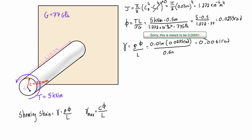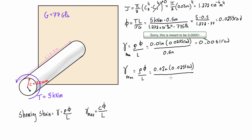That is the shearing strain at 10 millimeters radially from the center. If we want the shearing strain at 20 millimeters — two-thirds of the way out — we use the same formula: rho times angle of twist over L. So we get 0.02 meters times 0.0255 radians divided by 0.5 meters, which gives 0.00102 radians.